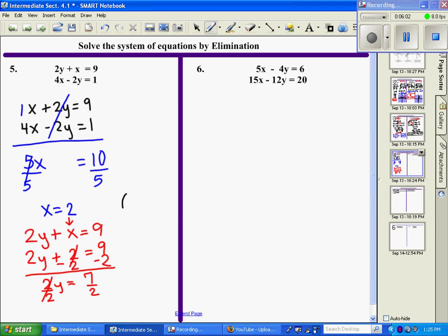Well, remember, we're going to write it as an ordered pair, and we have to put our x value first, 2, and our y value is 7 halves. So we have an ordered pair solution.